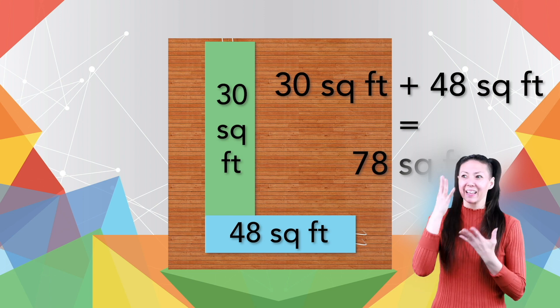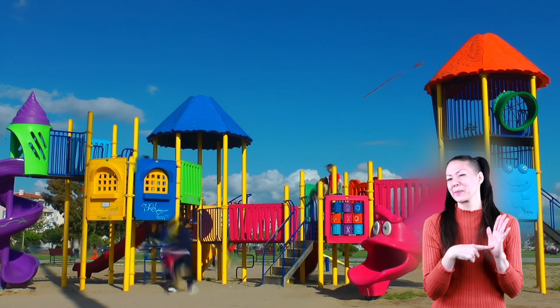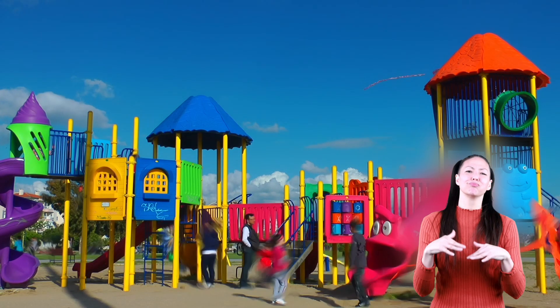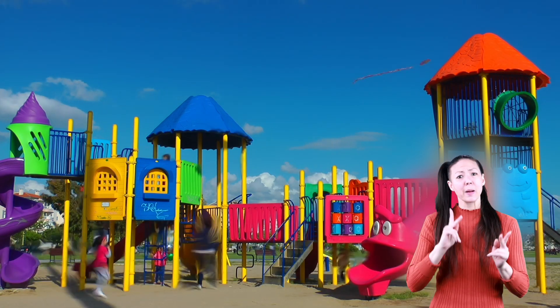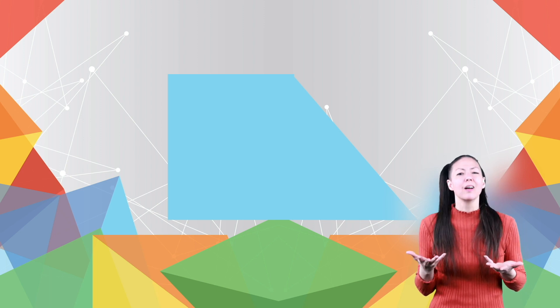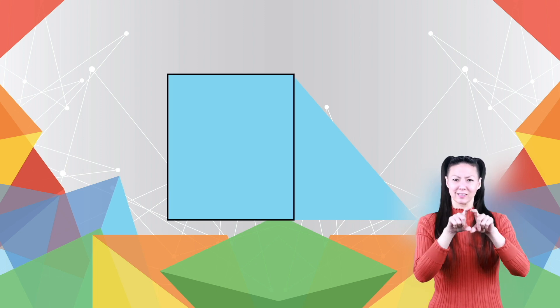Here's another example. Let's say a community wants to build a playground for the neighborhood kids, and they want to tell the people living there what its area will be. If the playground looks like this, you can easily see that you can break it down into one rectangle and one triangle.